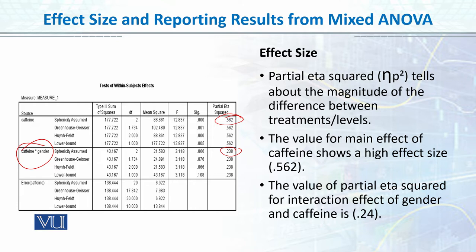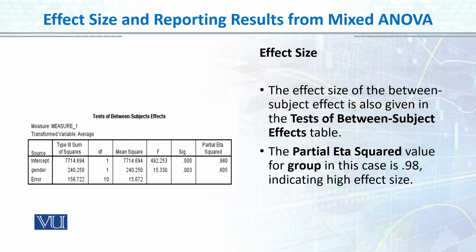We will report this, and then our between-group variable, which is gender, is also given in the last column of partial eta square. The partial eta square value for group in this case is 0.605, indicating a high effect size. We have seen in the graph that females were scoring high — the green line was above for the memory task across low, medium, and high caffeine levels. So there is a significant main effect of gender with a high effect size, i.e., partial eta square 0.605.